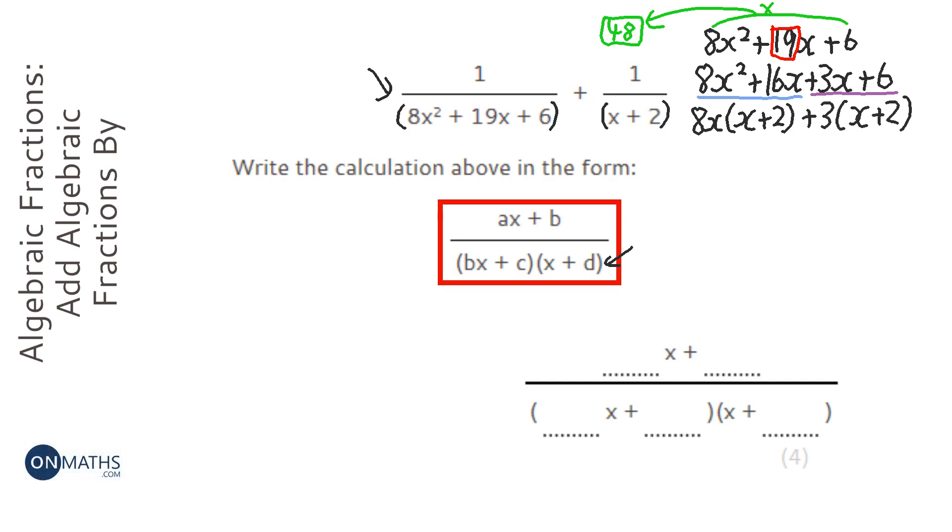And 3x plus 6x I can divide out a 3. And you notice that the bracket here is the same. Then you pair up the bracket that's the same with the bits on the outside. So you get 8x plus 3 and x plus 2.